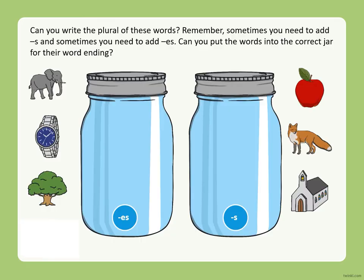Let's play a game! We're going to see if we can turn these words into a plural by adding s or es. Can you remember the trick? If the word ends in s, x, z, ch, or sh, we need to add es. Any other letter, we just add s. So we've got the words elephant, watch, tree, apple, fox, and church. You might want to pause the video here and have a little think about which jar they're going to go into — are they going to go into the s jar or the es jar?